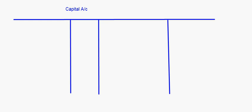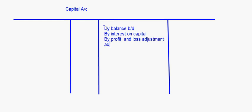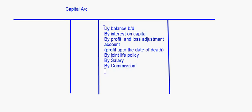I'll show a capital account with some imaginary figures. On the credit side, you have the opening balance of the capital account of that partner. If there is any interest on capital, you put it here. Then by profit and loss adjustment account — this will basically be your profit up to the date of death. If there is any joint life policy, that will be here. Any salary or commission given will come here, and if there is goodwill, that will come here too.